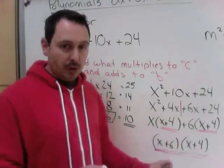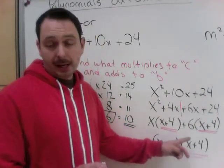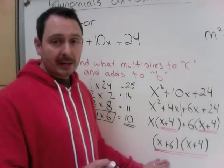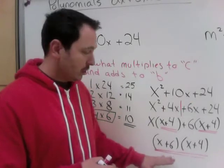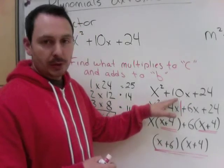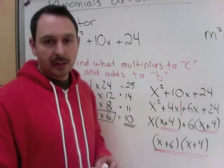x plus 6 times x plus 4. If you try it, go back and practice your FOIL that we just did. If you FOIL this or use the box method, you will get back to where you started, which is how you know you've done it correctly.